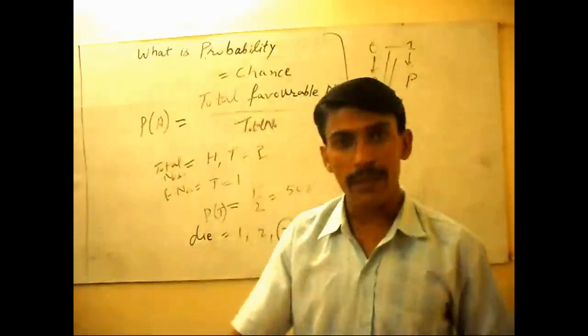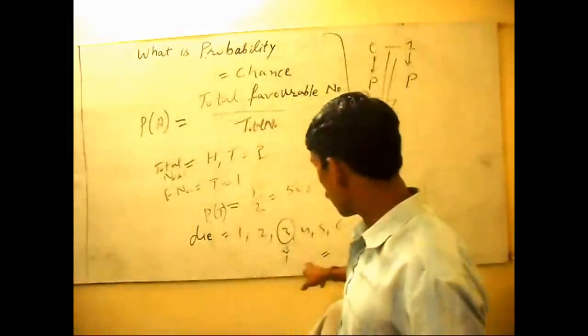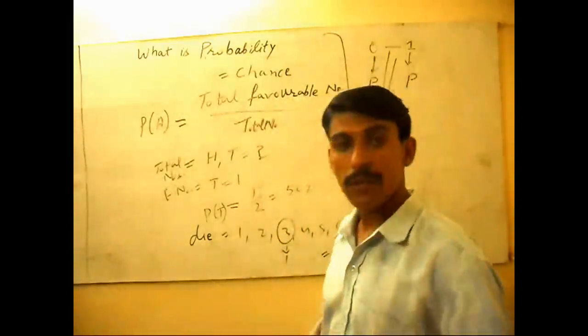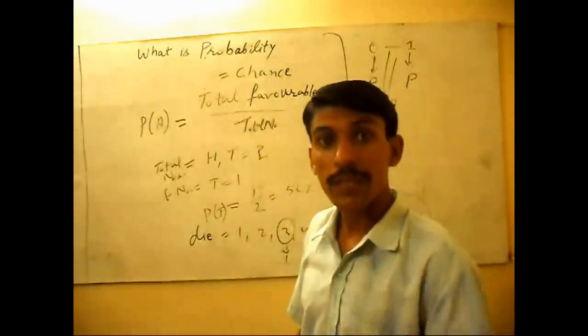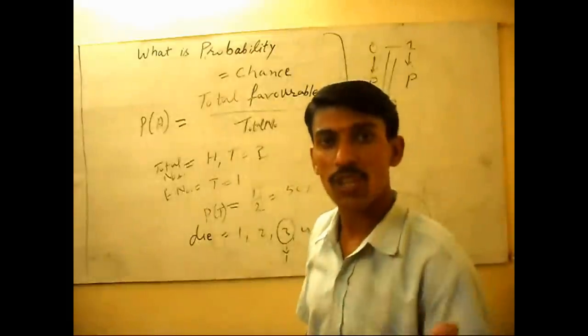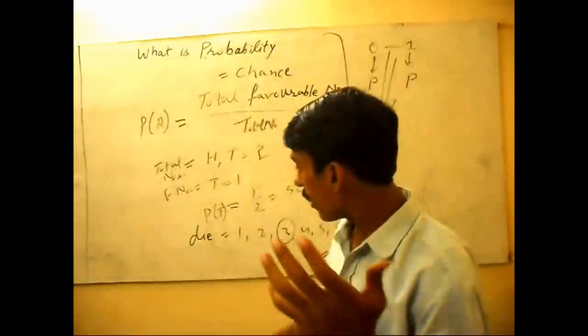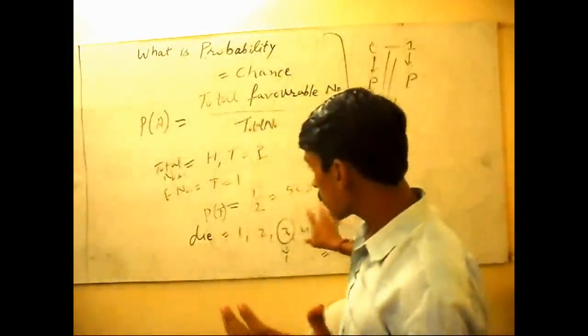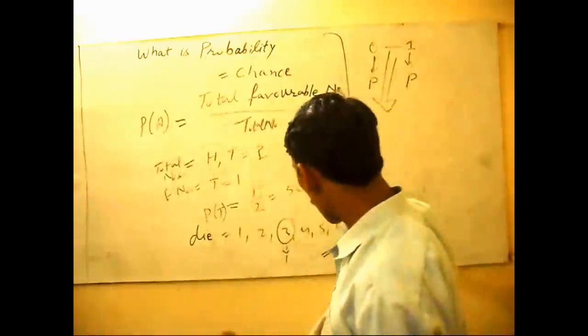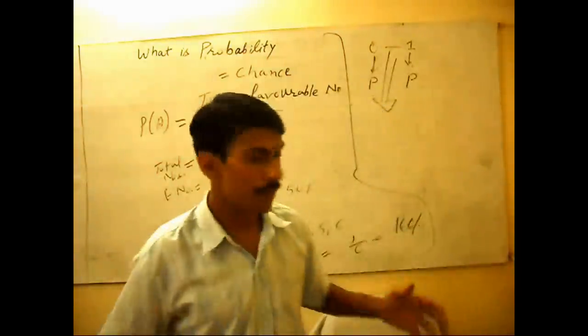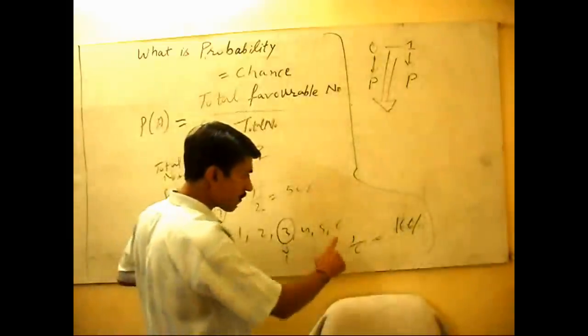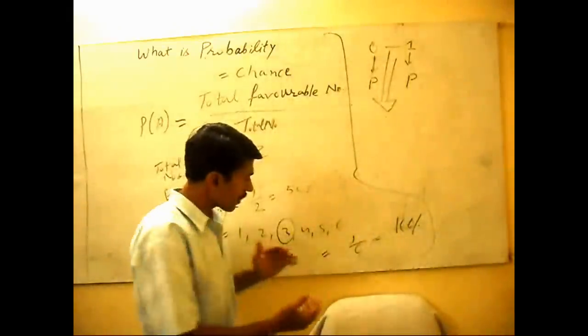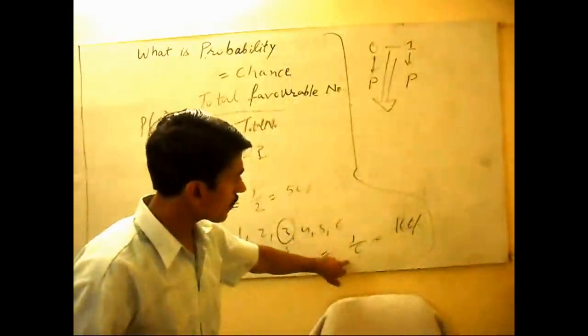You toss it and you will see here what will come. Suppose you guess it will be three. What is the possibility? What is the chance of coming three in six parts of a die? One divided by six. Three is only one number out of six.